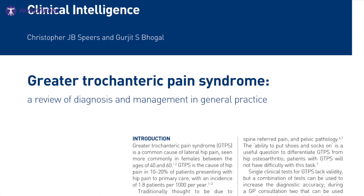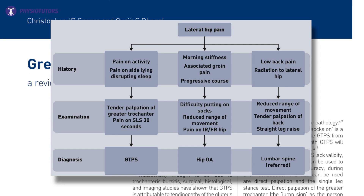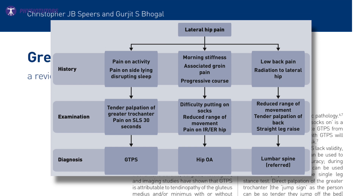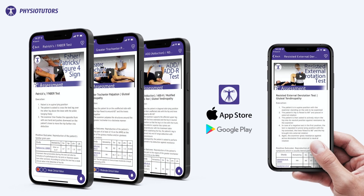Spears et al. in 2017 published a useful flowchart guide for differential diagnosis, seen here. This review discussed a lot of clinical tests with possible utility. Gannerton et al. in 2017 recommended the following: the Patrick's or FABER test, palpation of the greater trochanter, resisted hip abduction, and resisted external rotation test have the highest diagnostic test accuracy for gluteal tendinopathy.